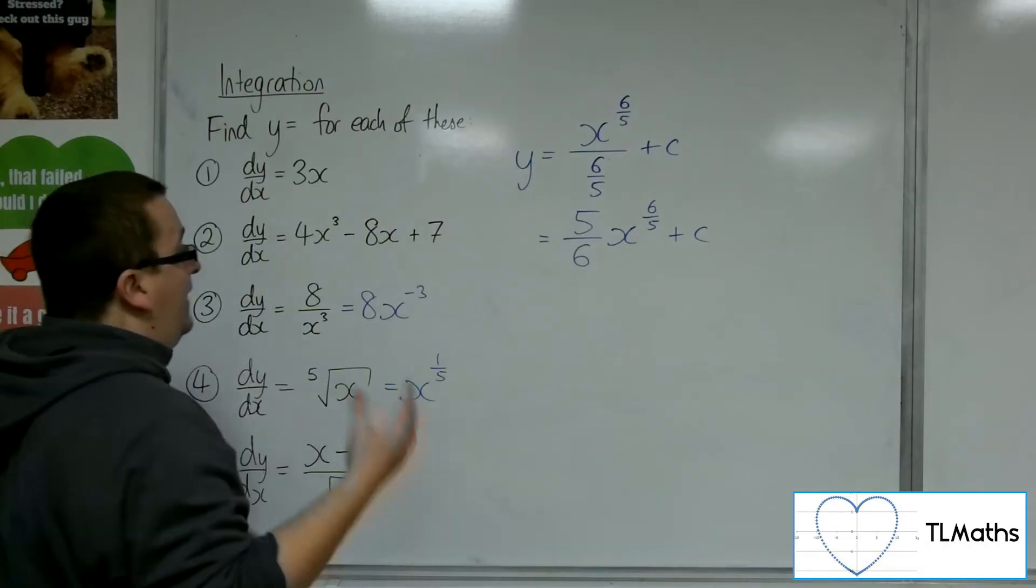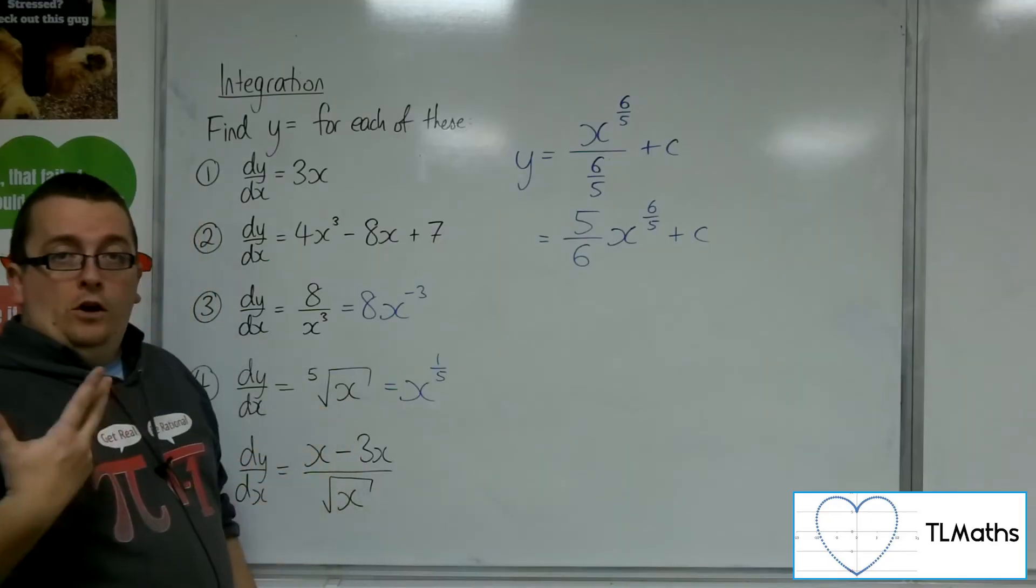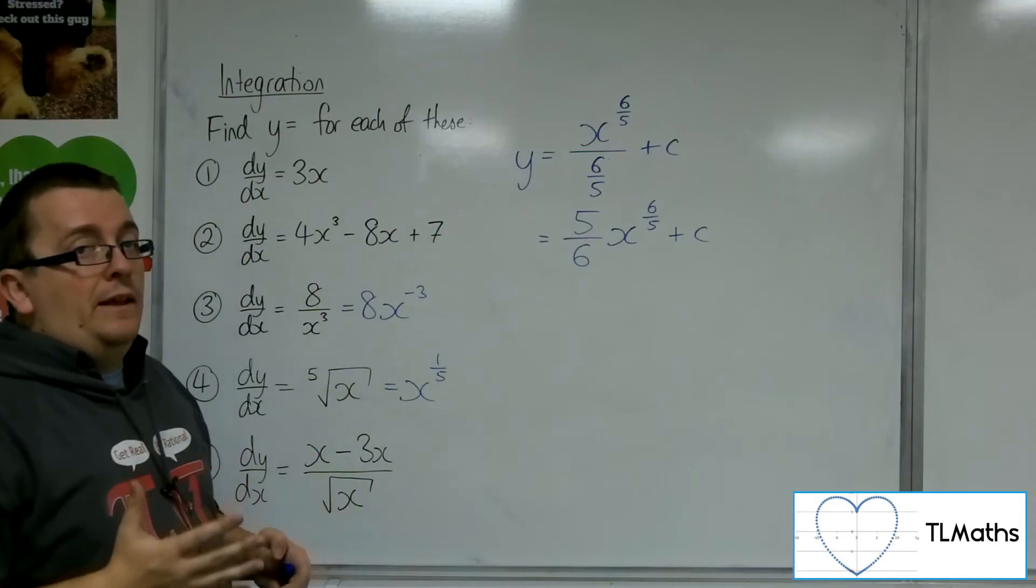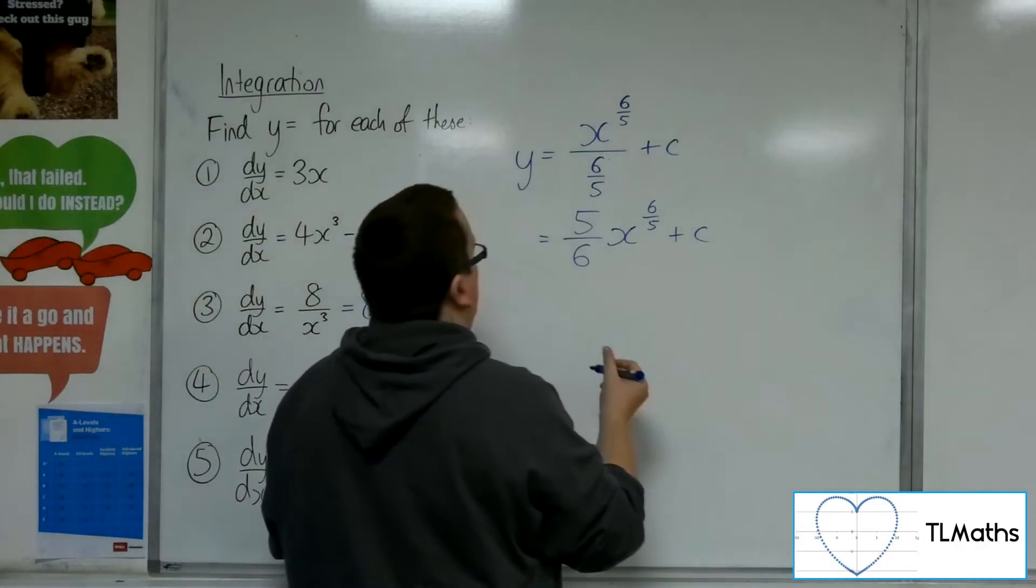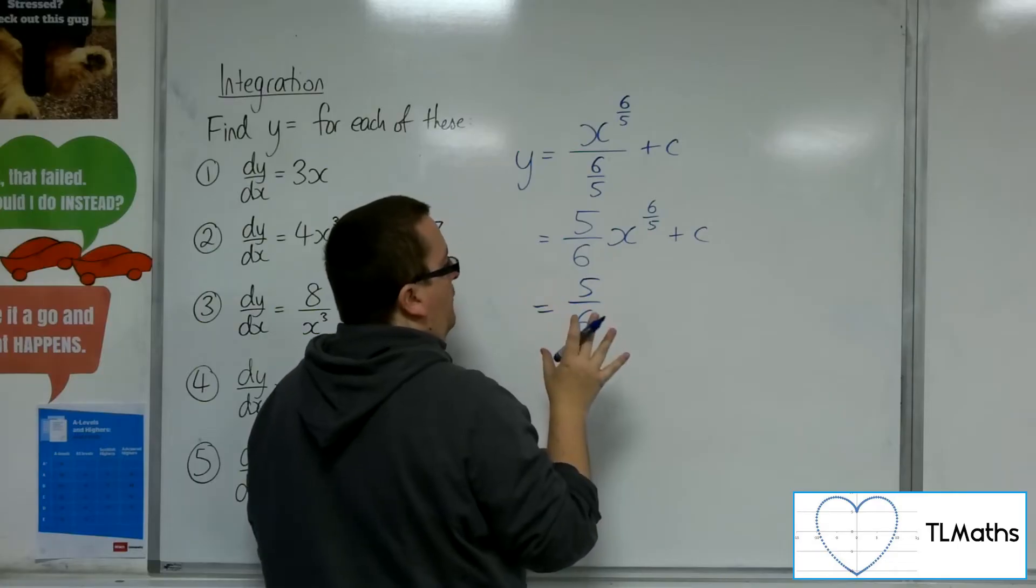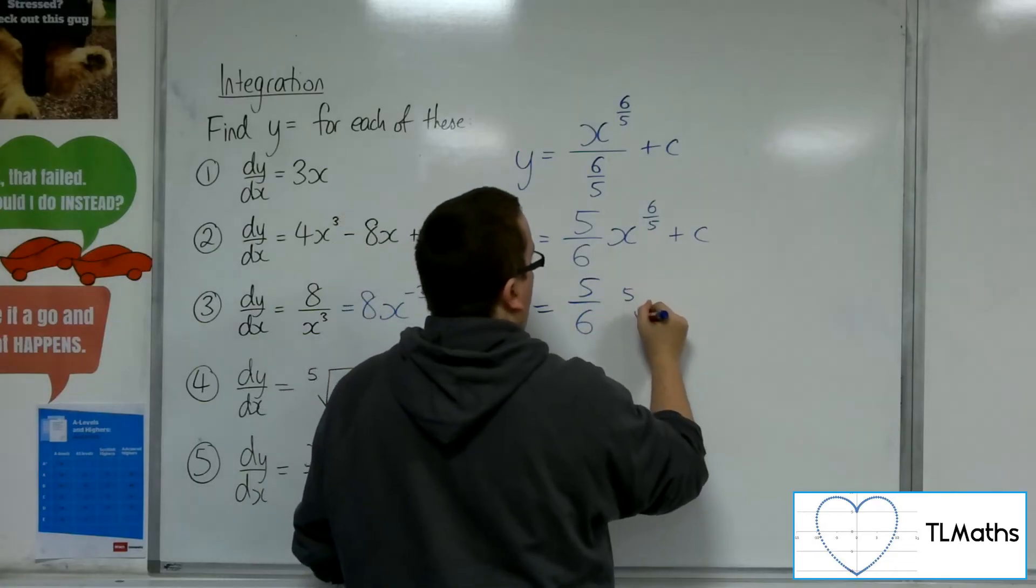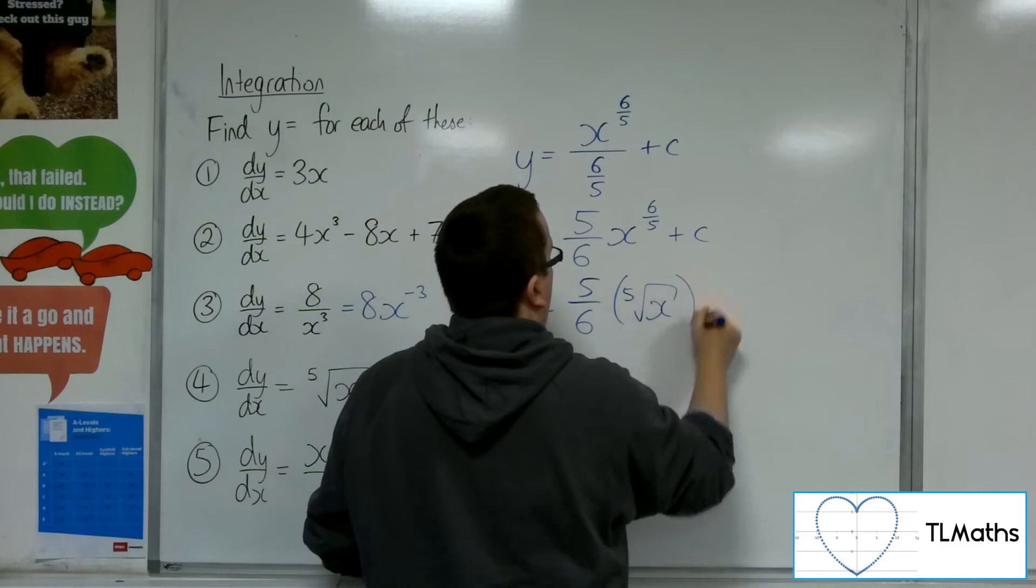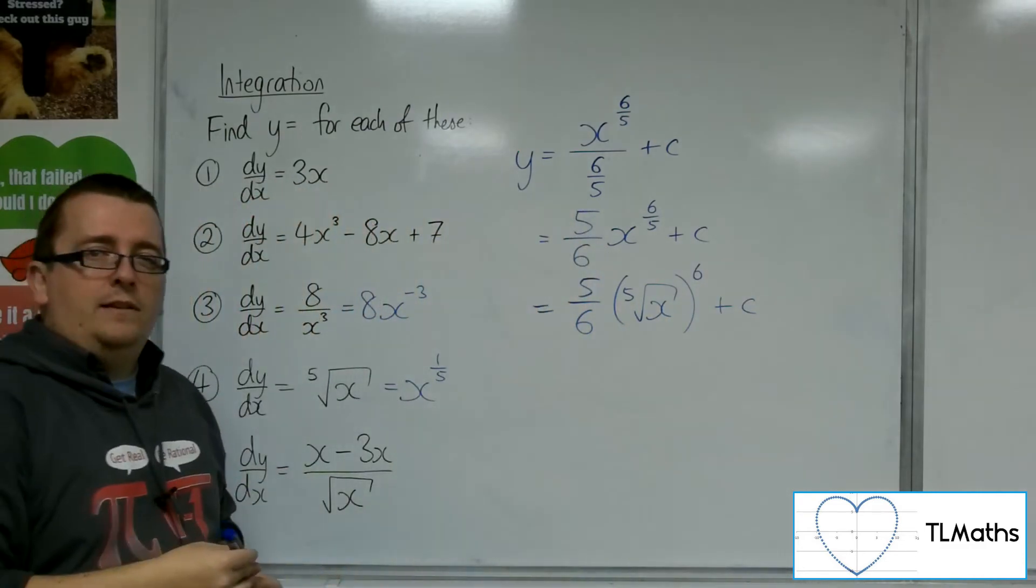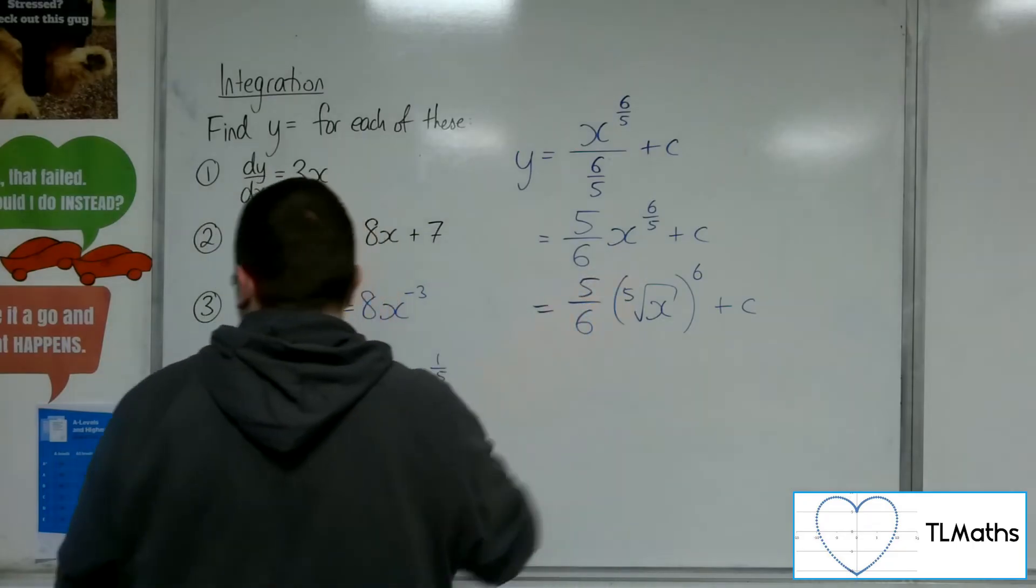Now, you might be wondering, can I write it back in the format of a root? You can, but it's messy. The reason why it's messy is because we've got that 6 fifths rather than just 1 fifth, and you could write it as the 5th root of x to the power of 6, but this is quite messy to work with. Much easier to write it like that.